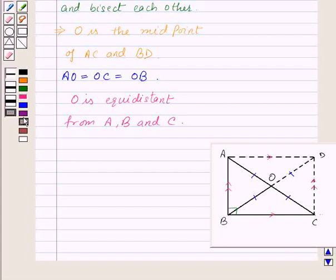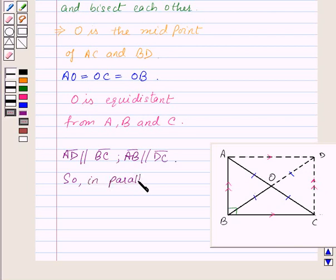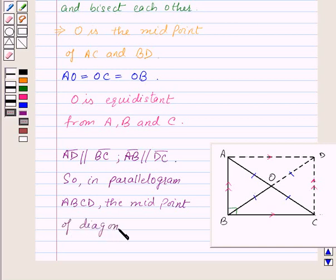Thus our final solution for this question is that AD is parallel to BC, AB is parallel to DC. So in parallelogram ABCD, the midpoint of diagonal AC is O.